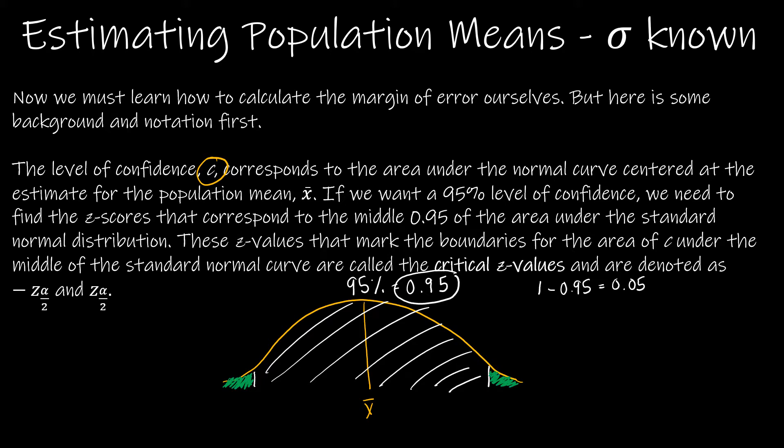But both of those sides are equal. So if I take 0.05 and divide it by 2, I get 0.025. That's how much area is in each of these tails.